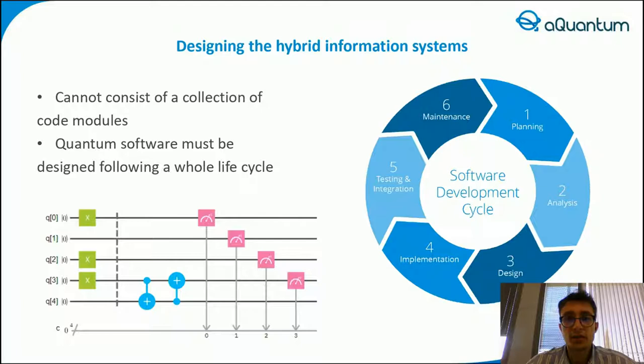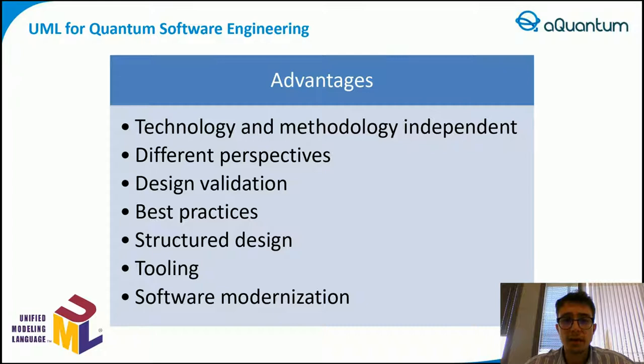The development of quantum or hybrid information systems cannot simply consist of a collection of code models, but should rather follow a whole life cycle. It does not matter how long the life cycle is, since what is certain is that quantum software must be designed at some point. Software design defines the architecture, system elements, interfaces and other characteristics of the system in order to accomplish goals, using a set of primitive components and needs subject to constraints. UML can help by gathering and analyzing software requirements and incorporating them into a programming design in a technology and methodology-independent manner.